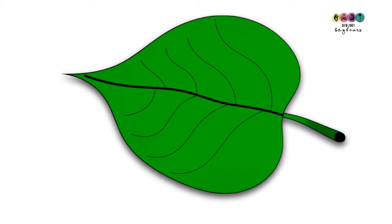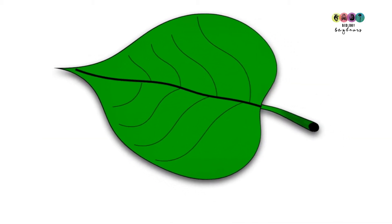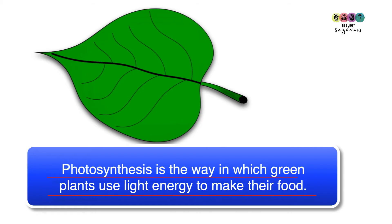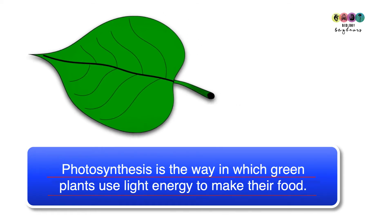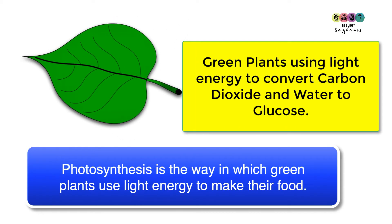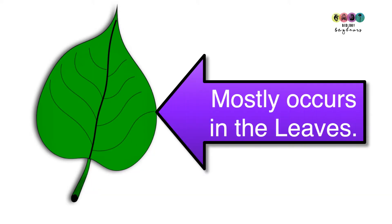From the equation we can simply say that photosynthesis is the way in which green plants use light energy to make their own food. Green plants are using light energy to convert carbon dioxide and water into glucose. Photosynthesis mostly takes place in leaves, however if the stem of a plant is green, photosynthesis can take place in those plant cells also.